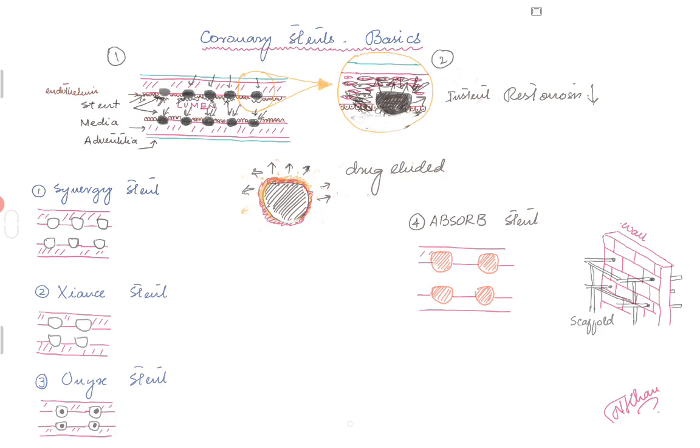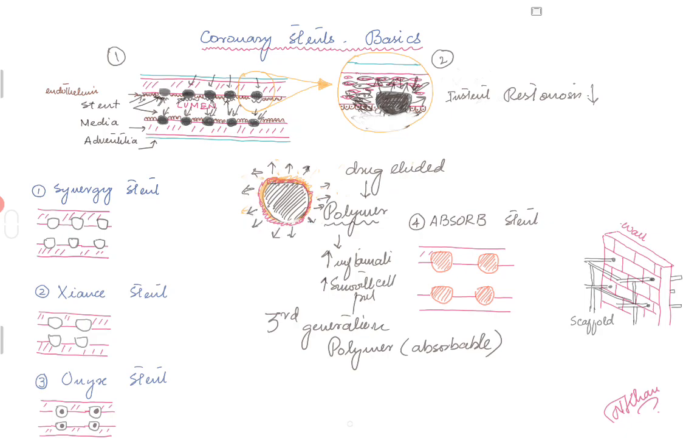What we're using right now in the third generation stents are the same anti-cancerous drugs, but around the stent strut there is a polymer which binds this drug and slowly releases it into the media, inhibiting smooth muscle proliferation. But this comes with a caveat: once the drug is gone, you're left with the polymer, and that polymer itself can lead to increased inflammation and smooth muscle cell proliferation. Now in the third generation of stents, they've taken care of this—the polymer that holds the drug is also absorbable. First the drug is released slowly over a period of months so there's no smooth muscle proliferation, and then later the polymer itself dissolves, leaving behind only the metallic stent struts.